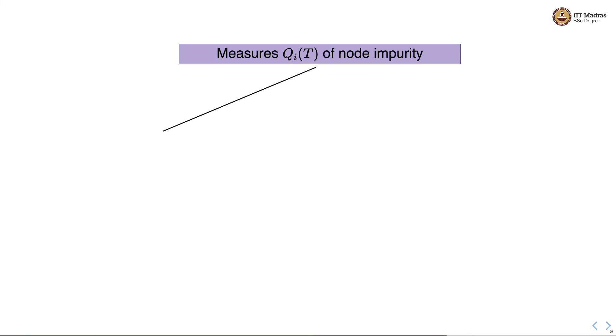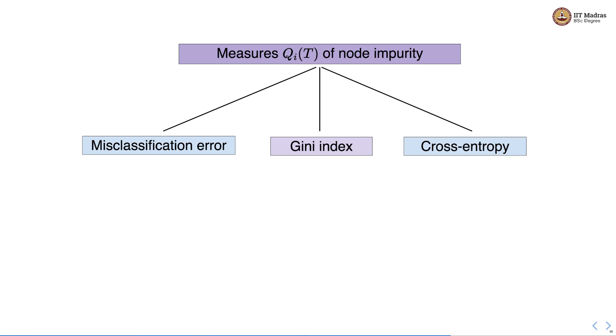In order to measure the impurity of the node we can use either misclassification error or Gini index or cross entropy.